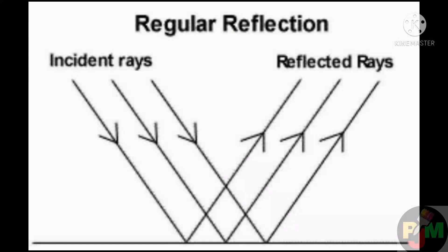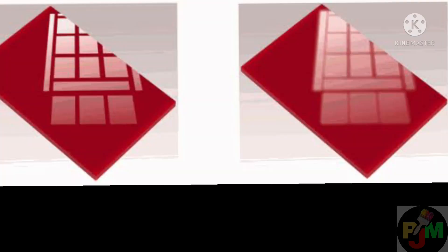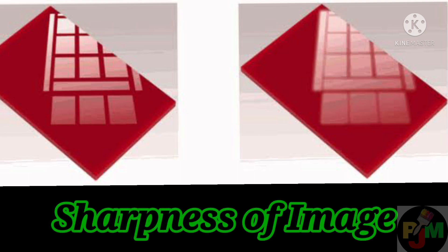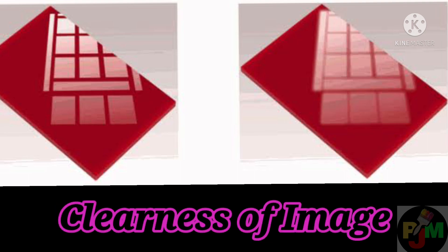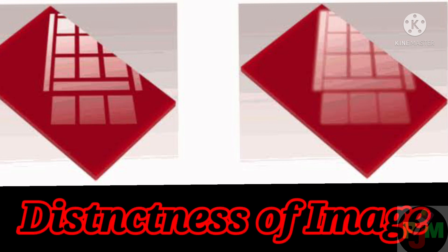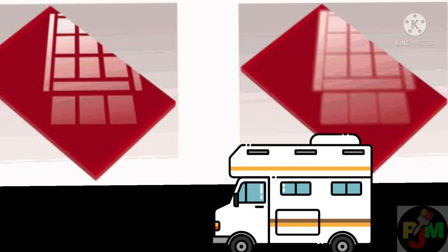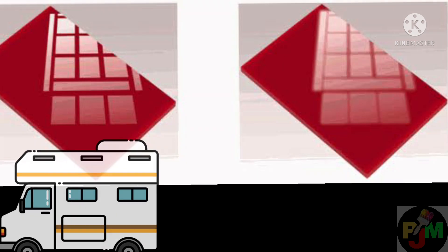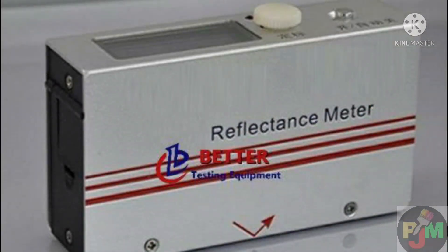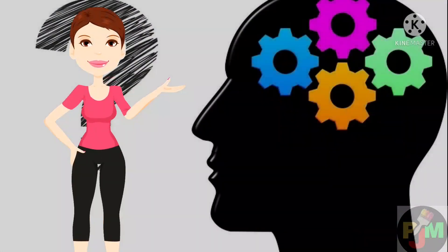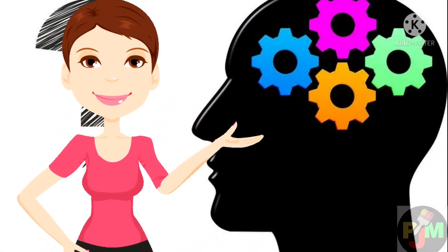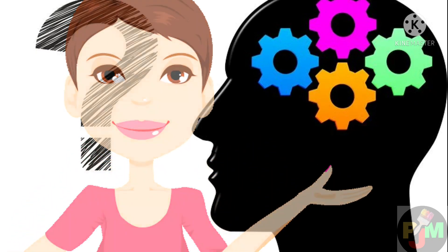Higher the proportion of regular reflection, greater will be the gloss. Gloss is also measured in terms of sharpness of image, or clearness or distinctness of image, also known as DOI, especially for auto finishes. The sharpness of the image is a feature of human judgment which the reflectometer does not measure. Thus, many times human observers form a different impression than that given by a glossometer.